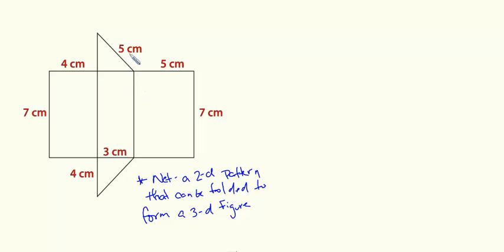So if I were to fold this net, this triangle here and this triangle down here would be my bases. They would be my two sides that are congruent and parallel.